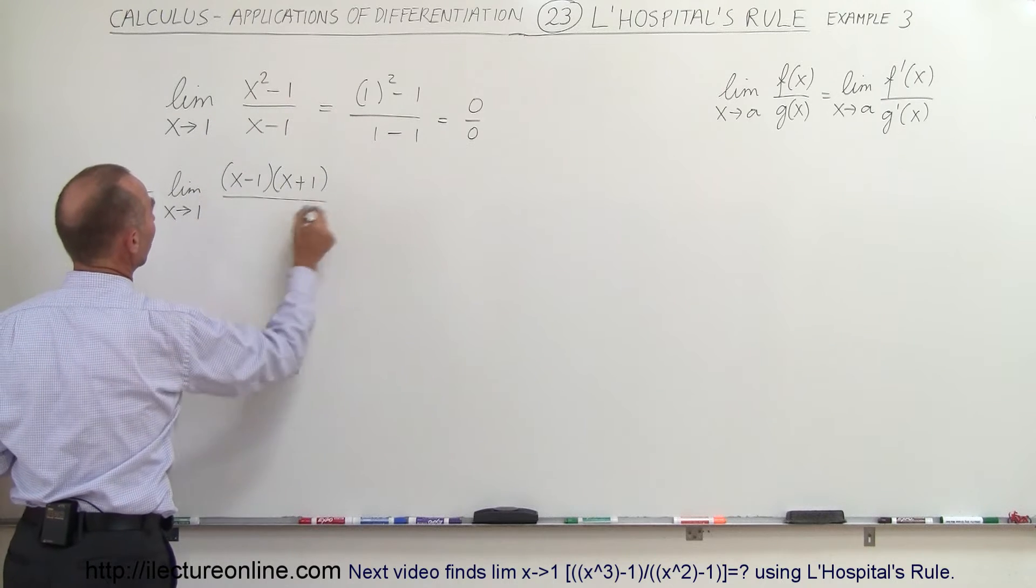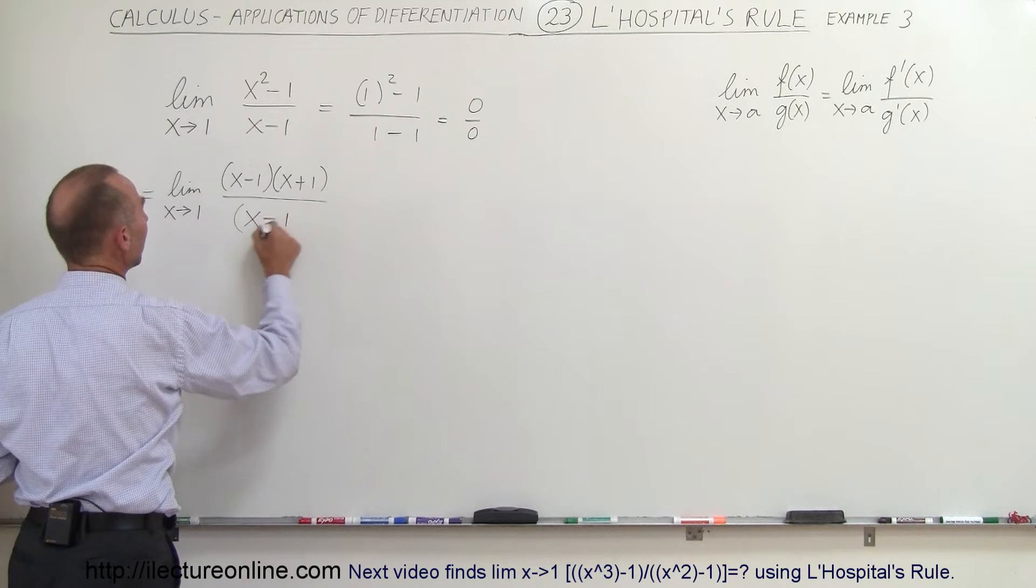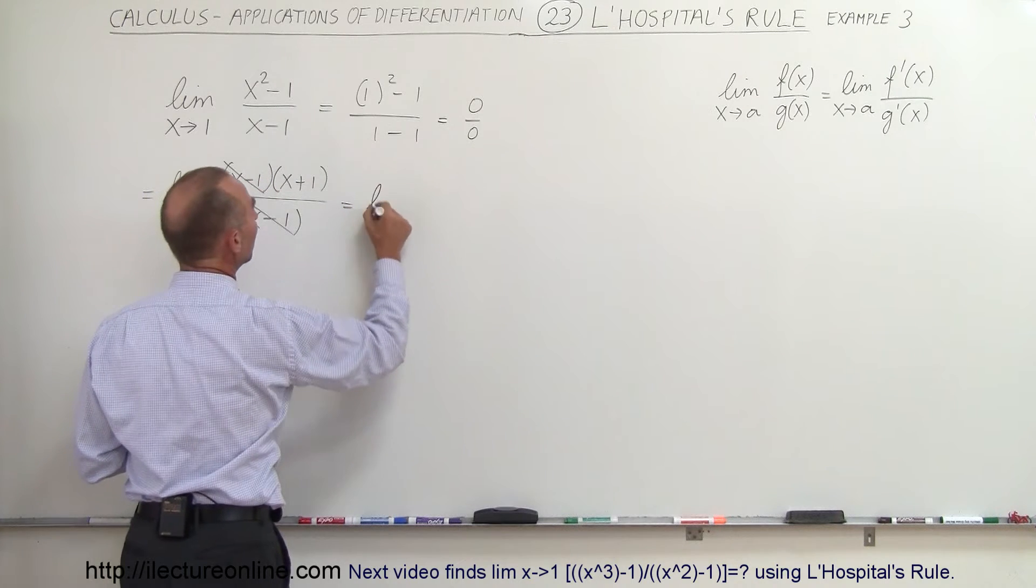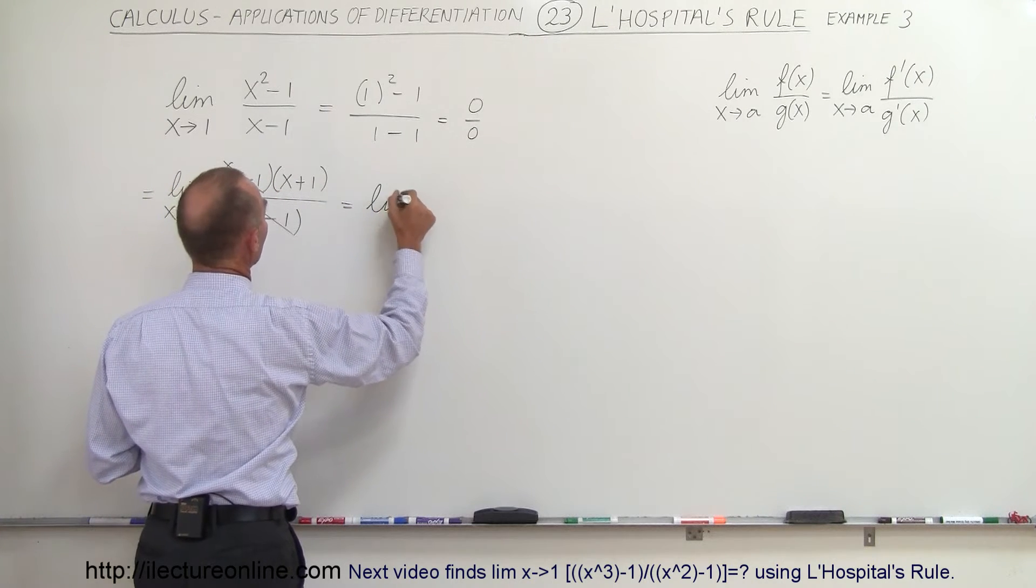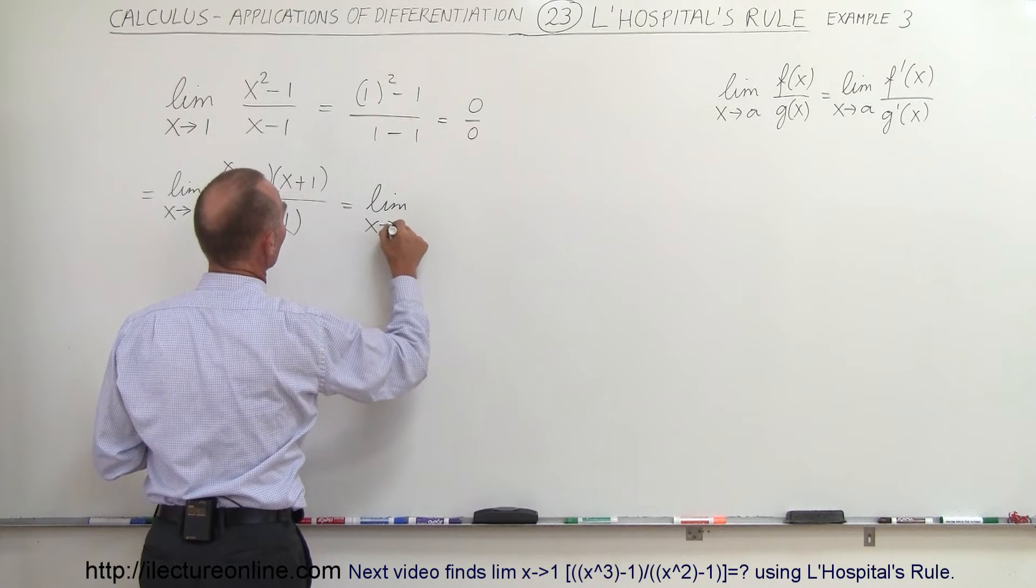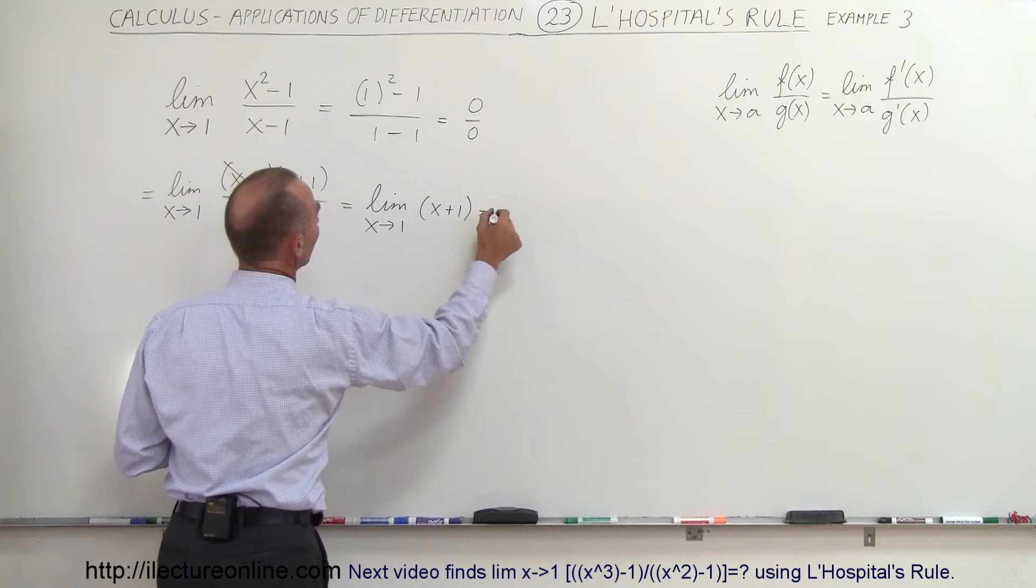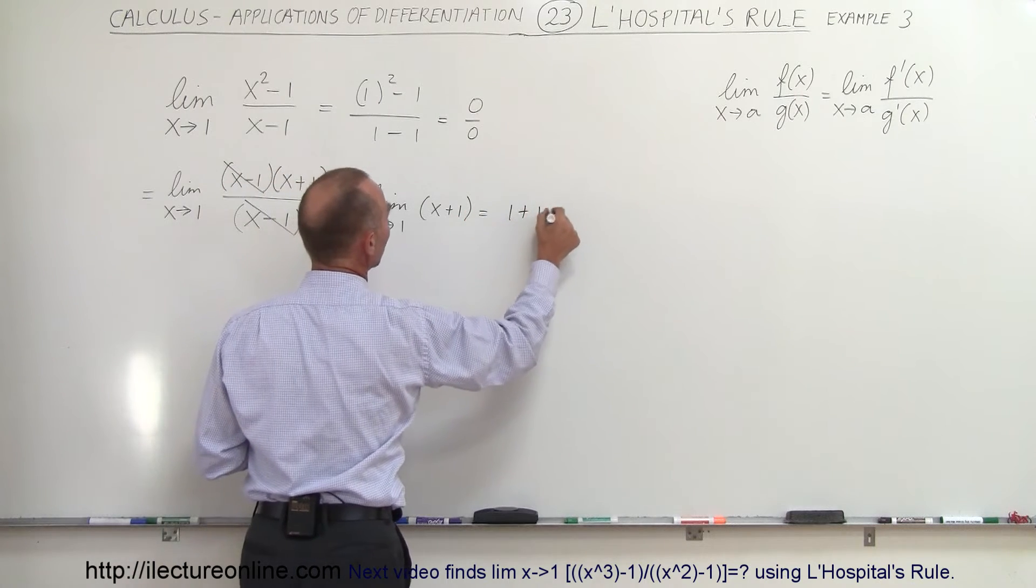Then you can see that this cancels out and you're left with the limit as x approaches 1 of x plus 1, which is simply equal to 1 plus 1, which is 2.